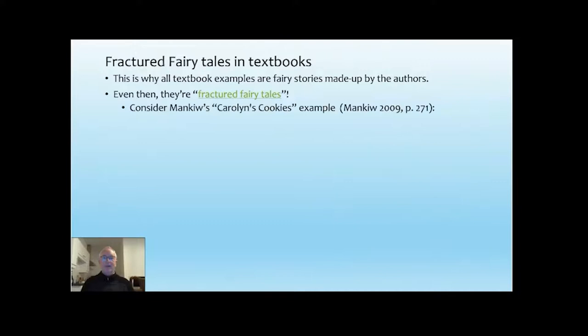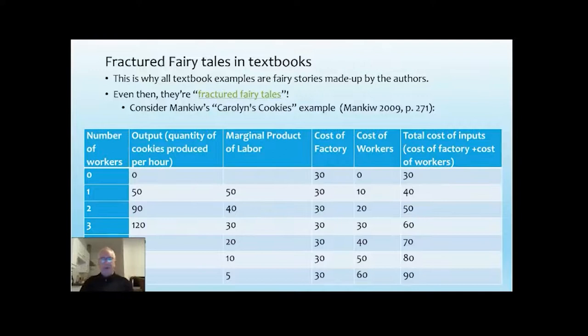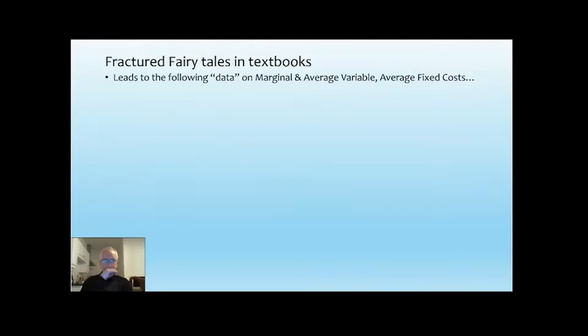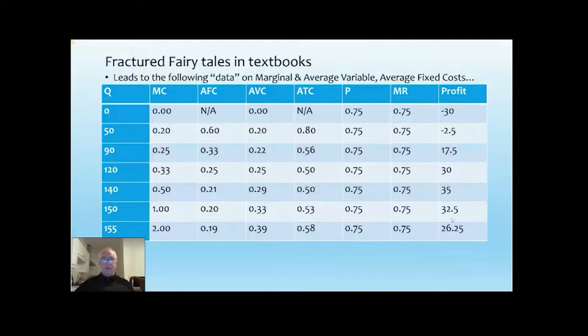Mankiw has 'Carolyn's Cookies' — he loves alliteration. This is an example from his textbook on page 271. He shows the number of workers, output in cookies per hour, marginal product falling all the way through, cost being constant — like an amortised factory cost. This leads to data on marginal and average costs and average fixed costs. Notice the marginal cost is rising, marginal revenue is constant, and profit is negative, then positive, and maximised at 140 units.